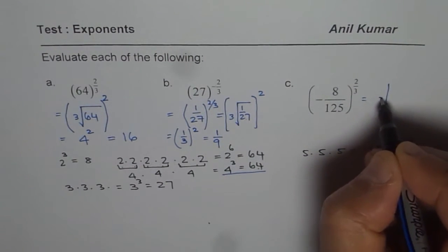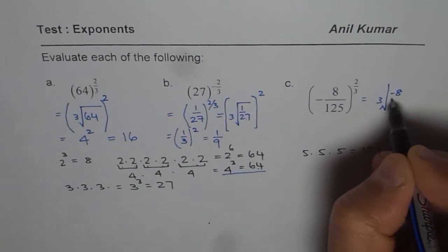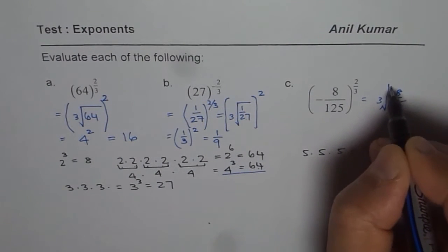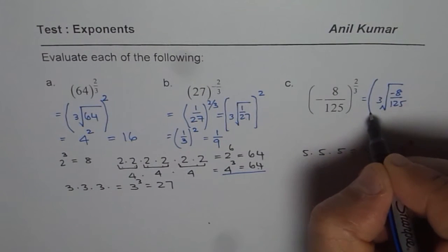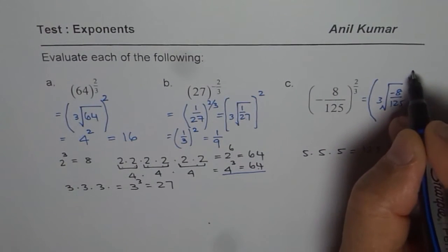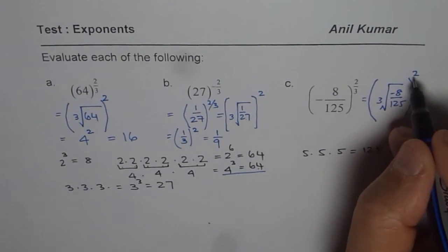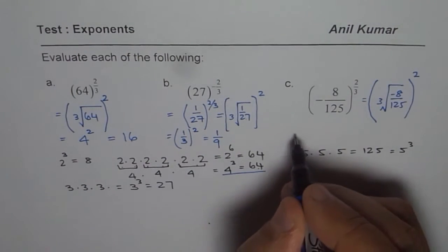We will do cube root of minus 8 over 125. And then, whatever is there, we will square that number. Ultimately, we are going to get a positive number because of this square.